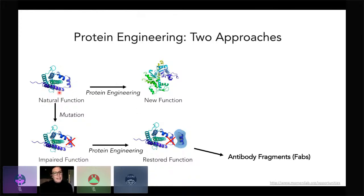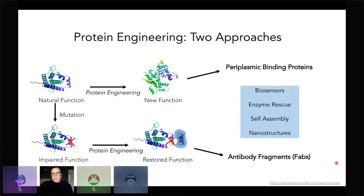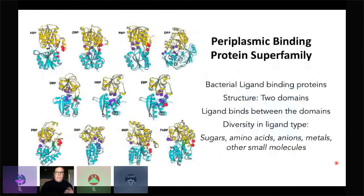The other approach is taking a normally functioning protein and engineering it to behave completely differently or have an entirely new function. We do this using periplasmic binding proteins, which are the main scaffold for this approach. The four research areas in the lab are biosensors — which is what we recently published and I'll discuss today — enzyme rescue, self-assembly, and nanostructures.